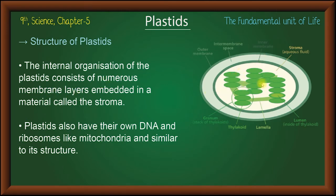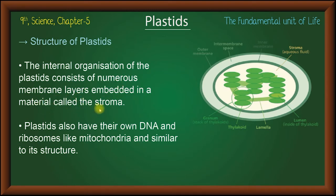Looking at the structure, we can see one, two, three — numerous membrane layers. There are many membranes in the middle. The material surrounding them is called stroma. The plastid consists of numerous membranes and layers embedded in the stroma.